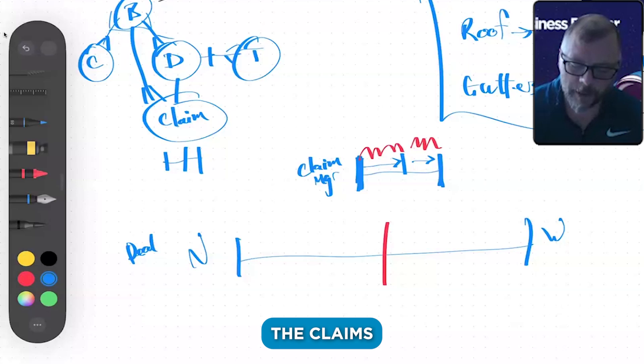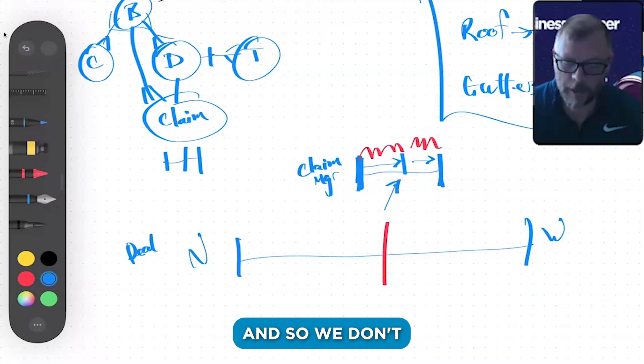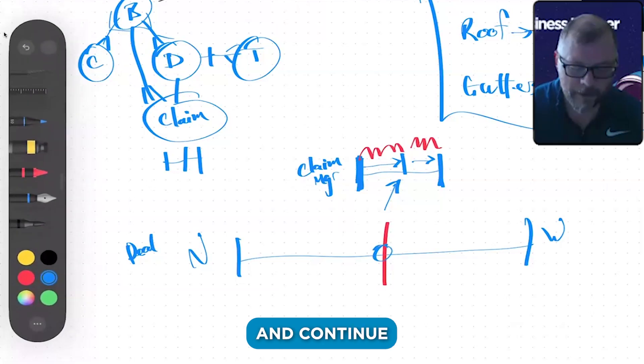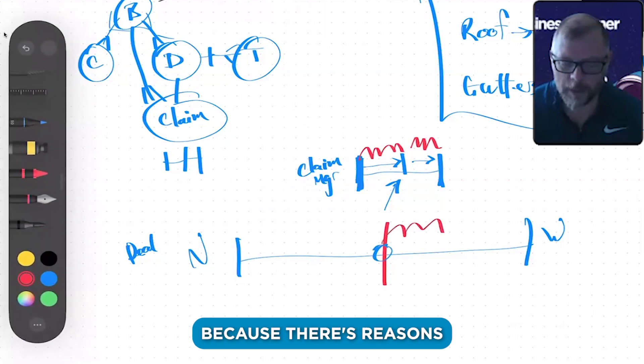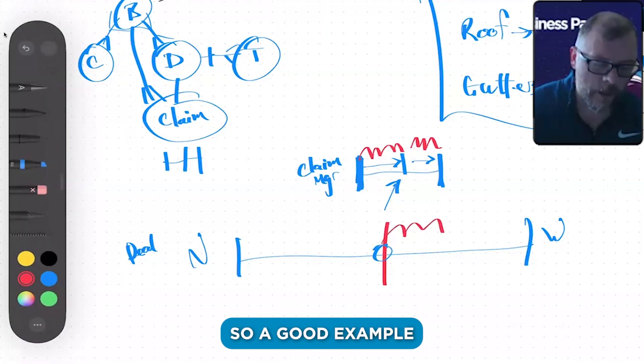We don't want to have our deal be allowed to go past and continue going through this, because there's reasons that could be bad. So a good example is there's separate pipelines for different trades.